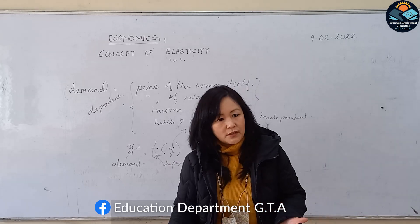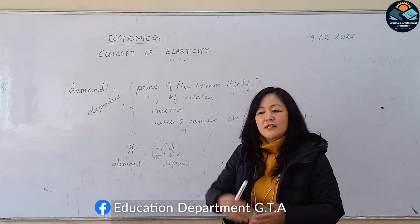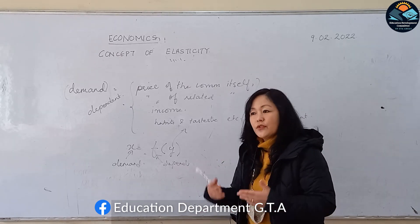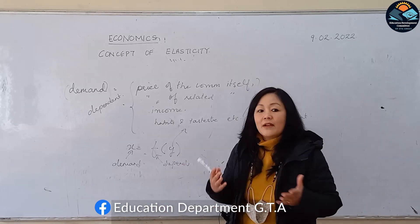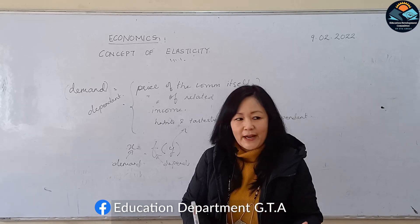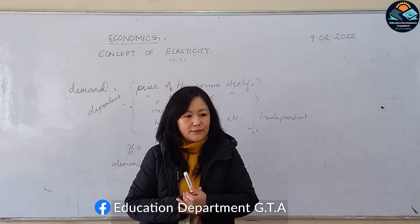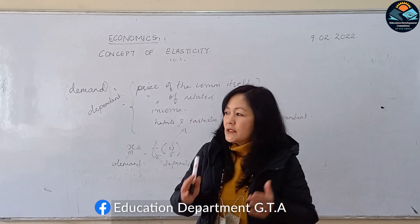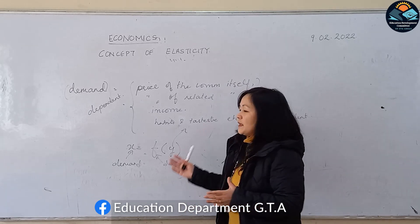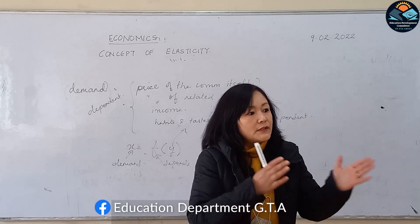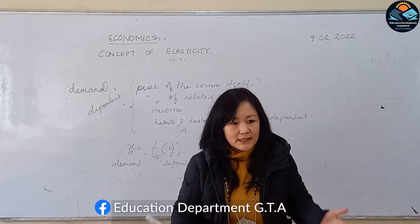How much will demand change when there is a change in any of these factors? For example, if price changes by 10 rupees, how much will demand change for any commodity, say potatoes? Will demand increase by 1 kg, 2 kg, or 3 kg? This is a very relative term, because whenever there is a change in price, the change in demand for each commodity will be different — it will not be the same for all commodities or for all consumers.